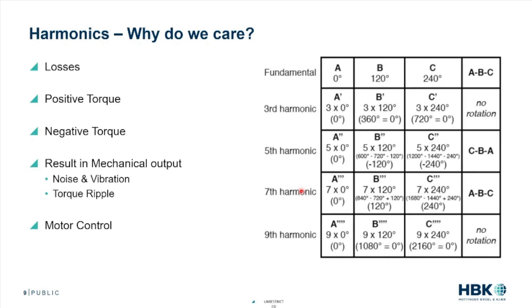The seventh harmonic goes in the positive direction — in theory, you could run the machine off the seventh harmonic because it has positive phase direction. If we understand the seventh harmonic, maybe we want to eliminate it, maybe we want it to boost torque, or maybe we can play with the fifth and seventh harmonics together to eliminate sixth-order vibrations. Then we get to the ninth, which is naturally eliminated because of the triplen. So we care because some harmonics cause problems: if the third is present, something's out of balance; the fifth causes negative torque or vibration or torque ripple. We want to mitigate them or use them to our advantage.